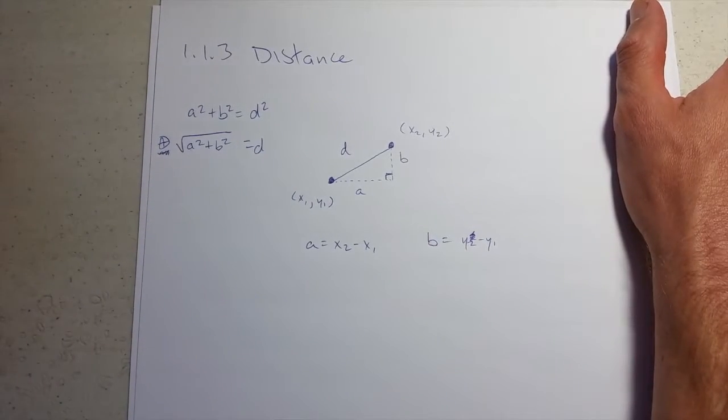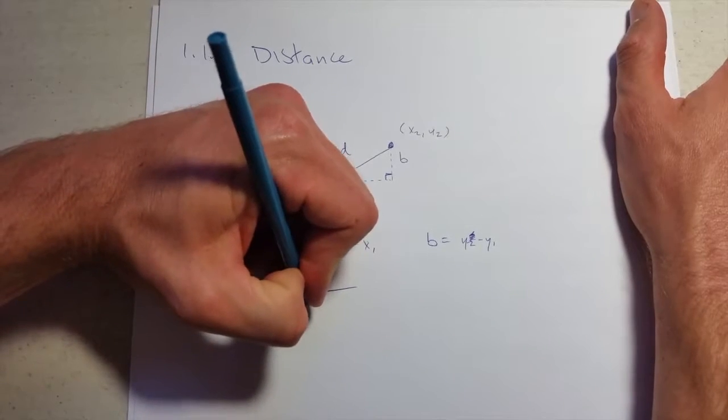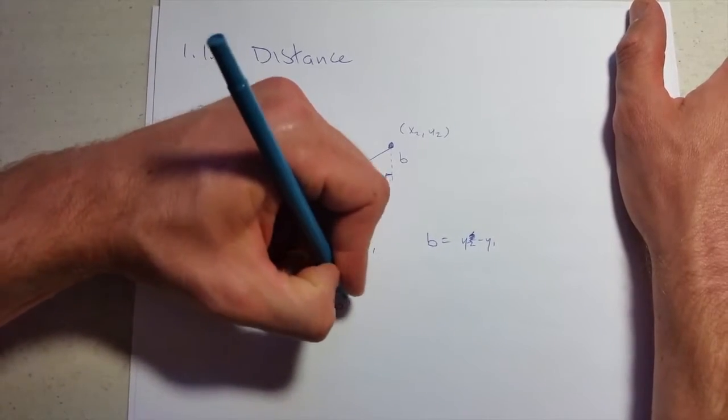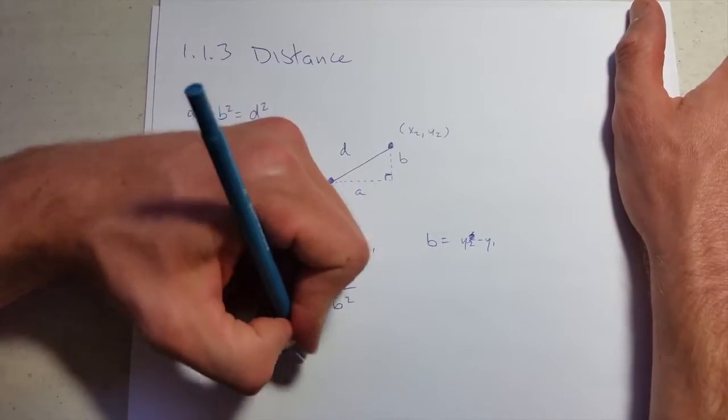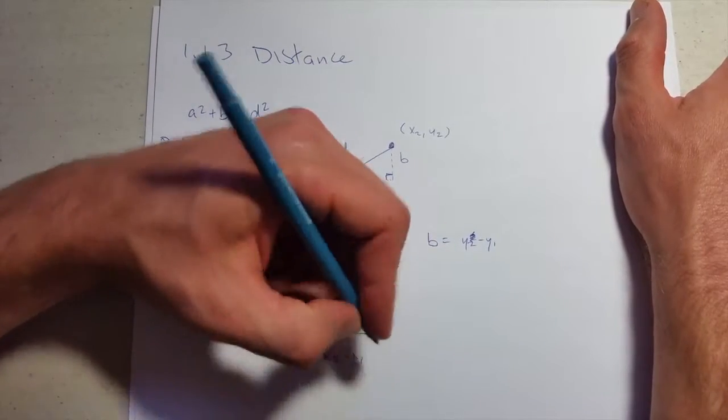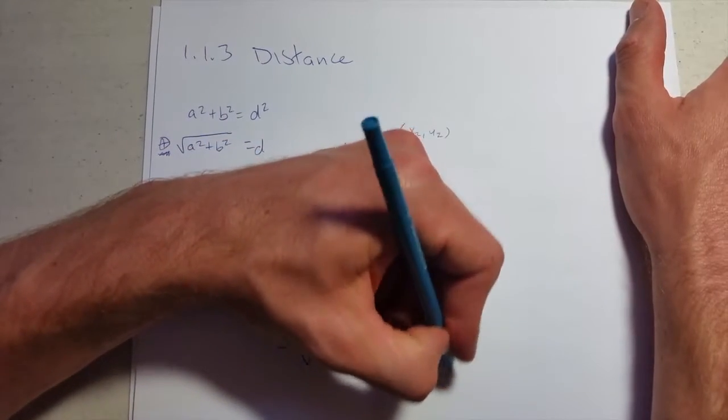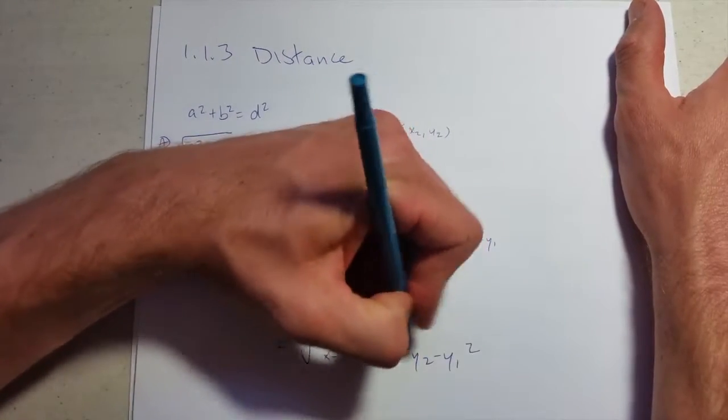Now we have a, we have b, we're ready to plug it right into the distance formula. d equals square root a squared plus b squared. So it's x2 minus x1 squared plus y2 minus y1 squared.